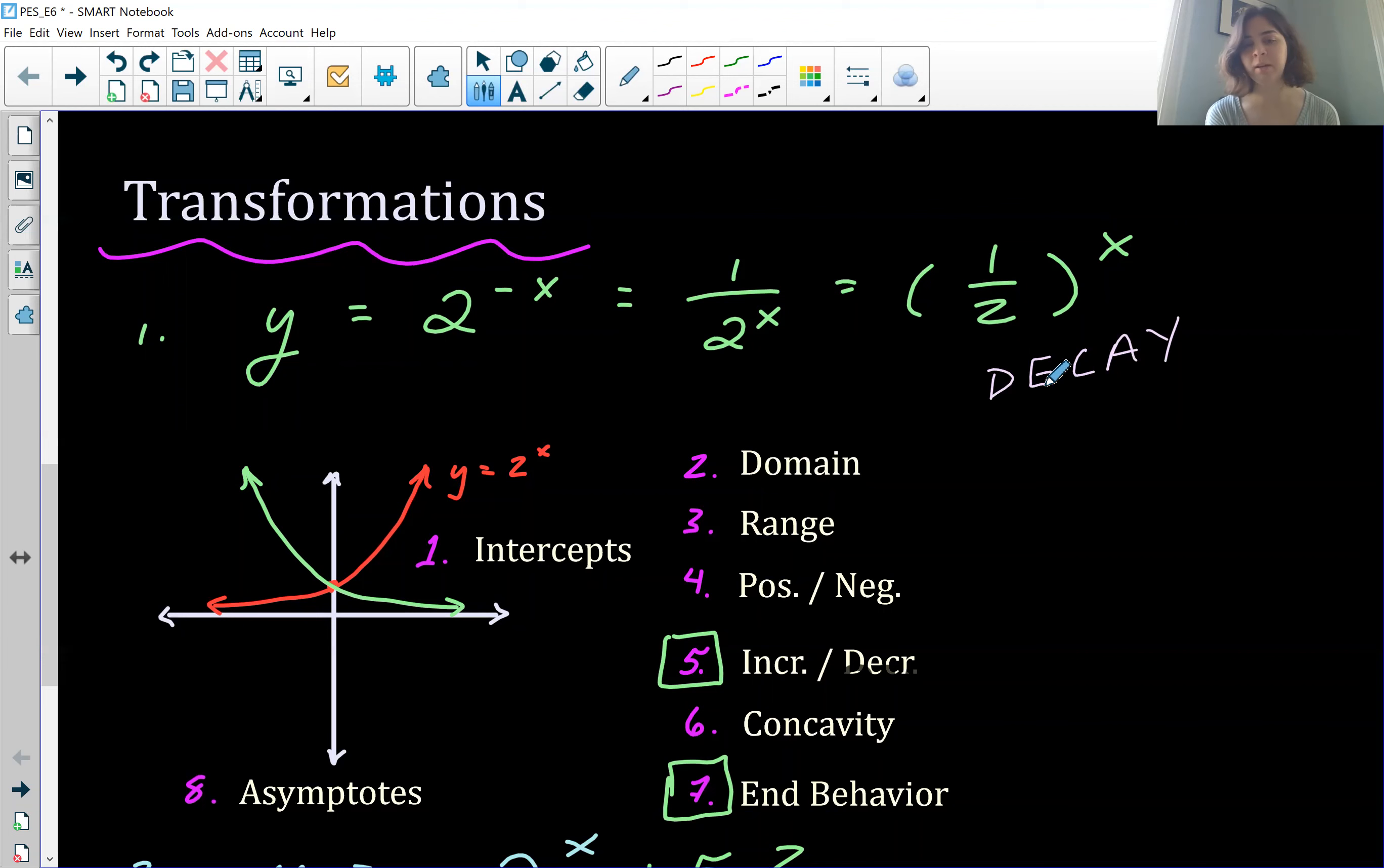Domain is the same, we can plug in anything. And then range is going to be the same as well, which might be a little less intuitive, but it's easier to see if you just graph it. And so you can see on the green curve over here that even though it's flipped, the range is still from zero to infinity.